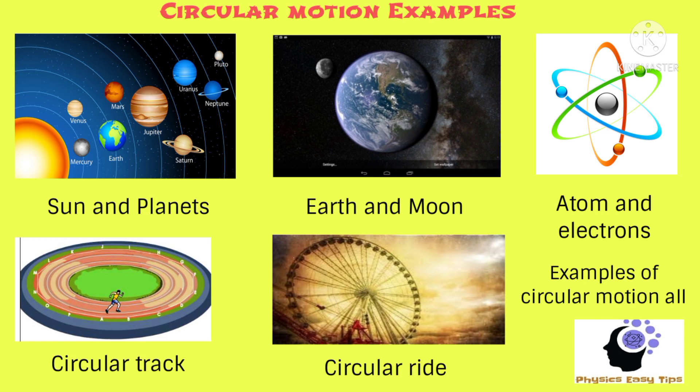So a boy moving on a circular track is an example of circular motion. Atoms and electrons — these are all examples of circular motion.